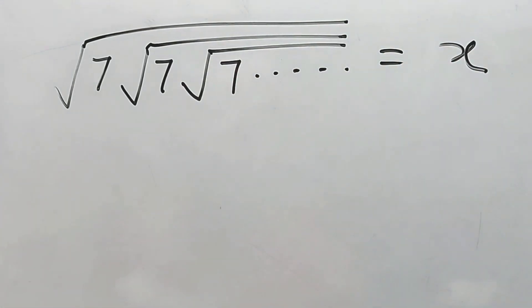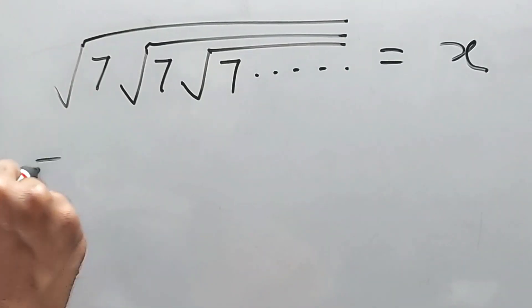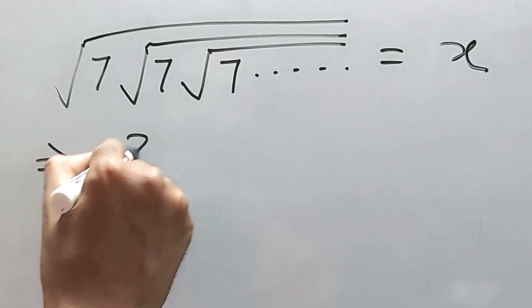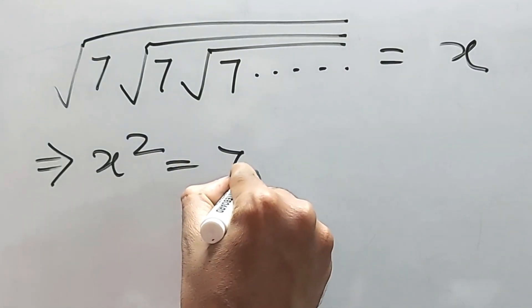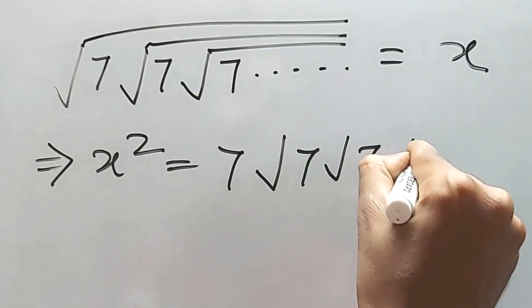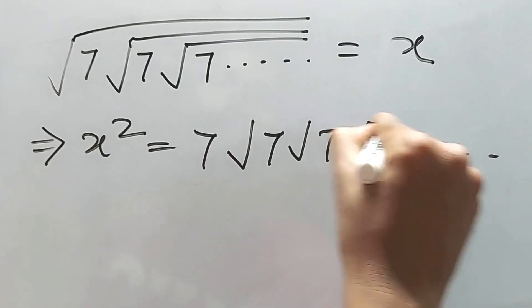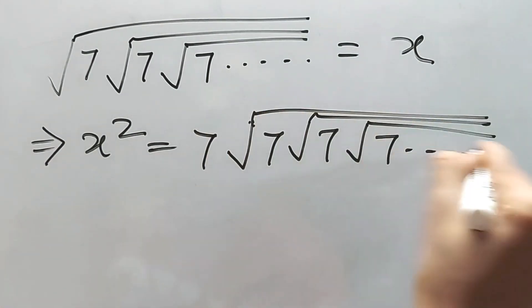Now, if we square both the sides, we will get x squared is equal to 7 will come out. The rest will be square root of 7, square root of 7, square root of 7 up to infinity.